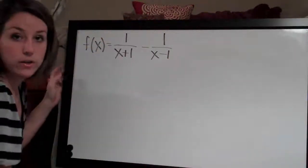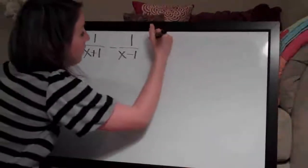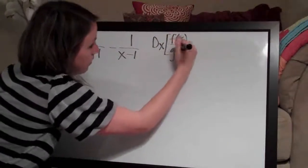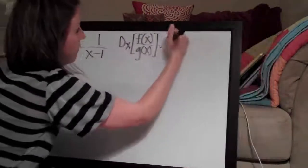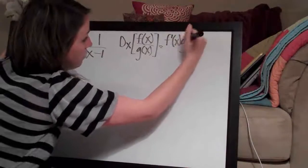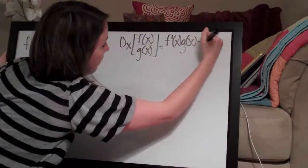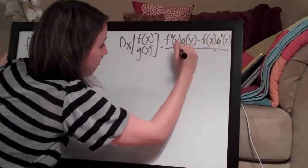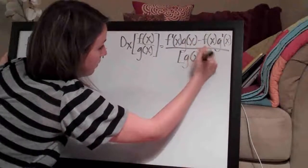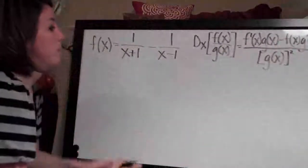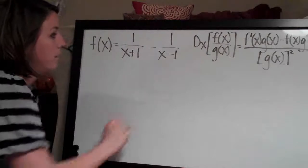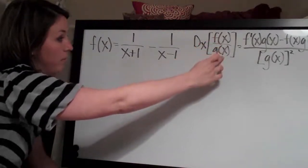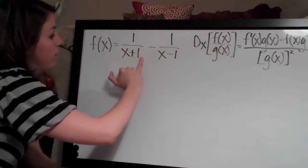Let's go ahead and write out the quotient rule so that we have it here for reference. It is d of x of f of x over g of x equals f prime of x times g of x minus f of x times g prime of x, all over g of x squared. In our problem, f of x here is 1 and g of x is x plus 1.